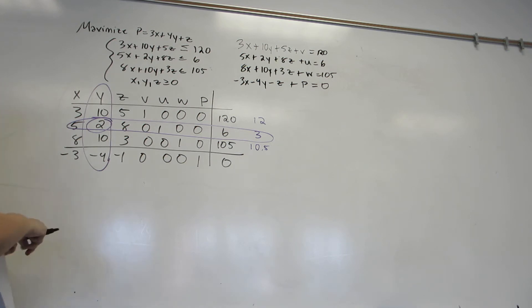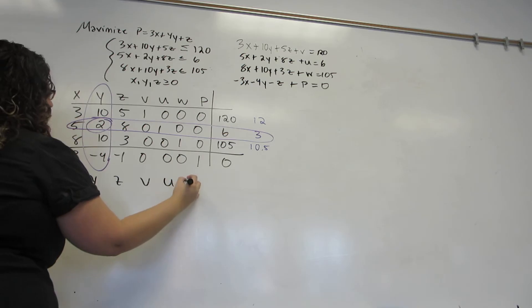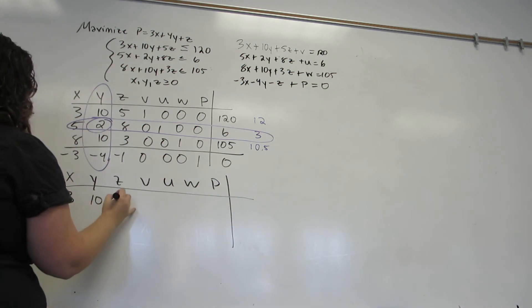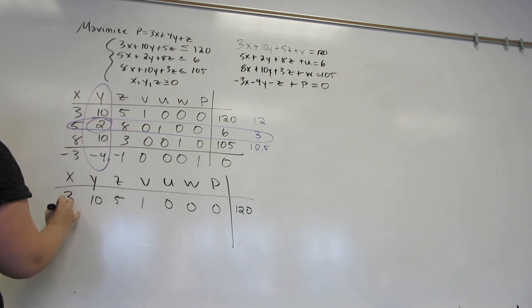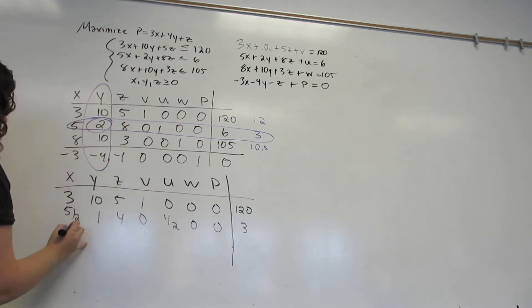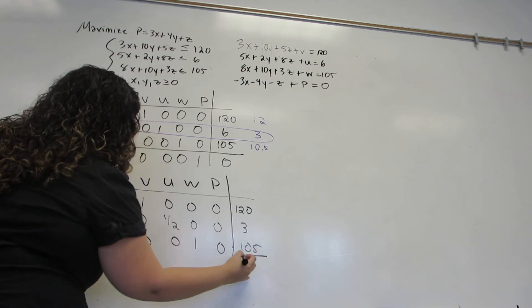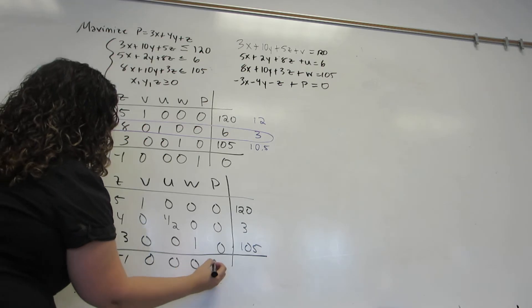Next, I'm going to divide this whole second row by 2 in order to get a 1 in that position.